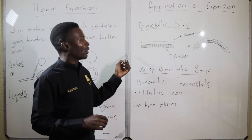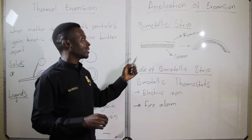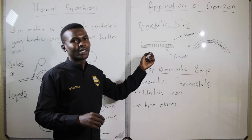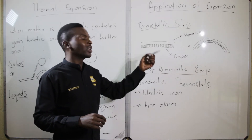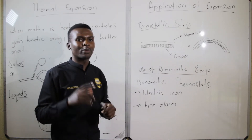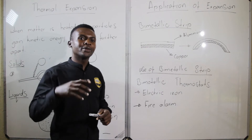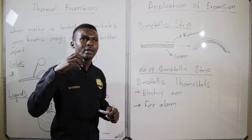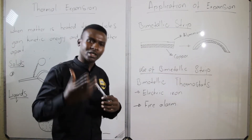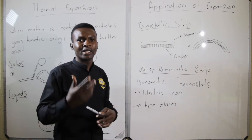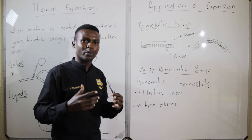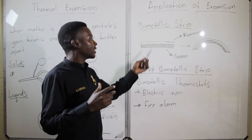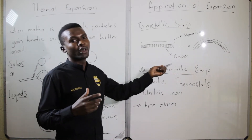When you apply heat to the bimetallic strip, the aluminium will expand much further — the particles will gain more kinetic energy and will expand further or much greater than copper.